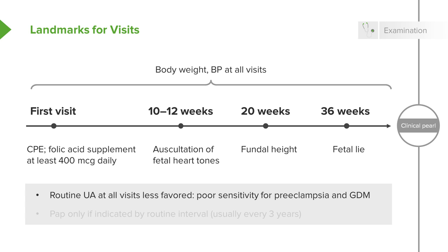What may you not want to do? Routine urinalysis is now not favored at all visits — it has poor sensitivity for diagnosing common disorders such as gestational diabetes and preeclampsia, which are better evaluated in other ways, such as blood pressure checks and glucose tolerance testing. Cervical cancer screening during pregnancy should be done only if the patient falls into her regular three-year Pap test cycle — if she had it done a year ago and it was normal, no need to repeat it.